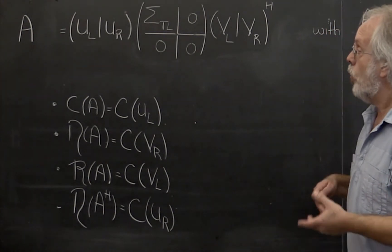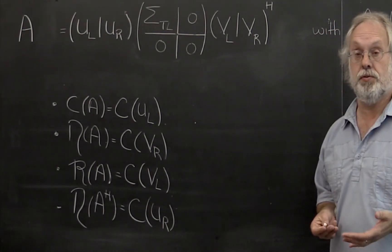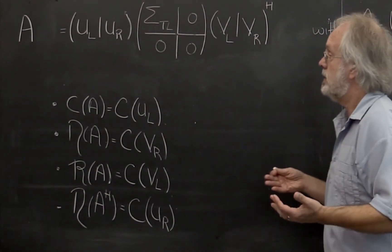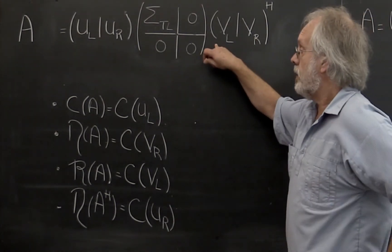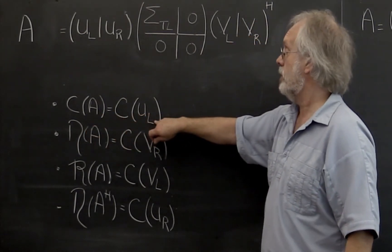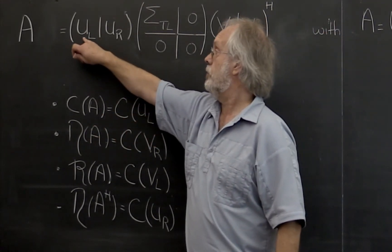It turns out that once you have the singular value decomposition, all of these kinds of things fall right in your lap. Let's have a look at that. If you have the singular value decomposition, it turns out that the column space of A is just the column space of U_left.